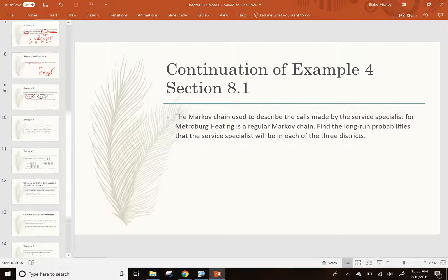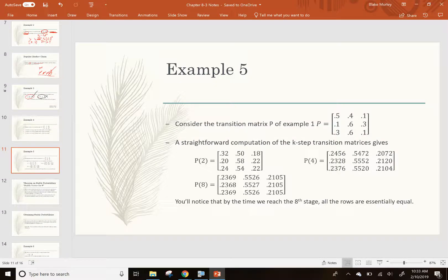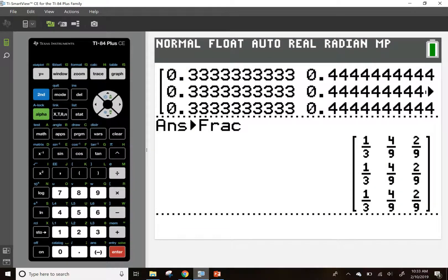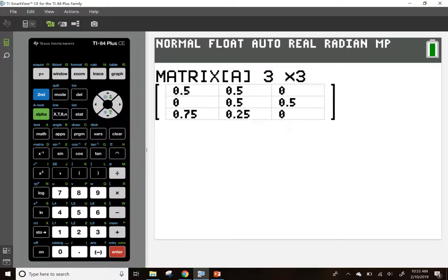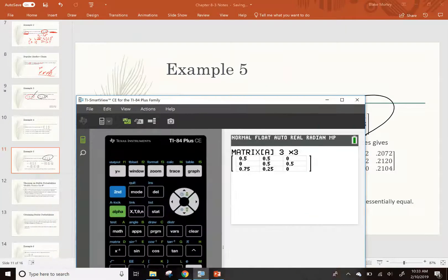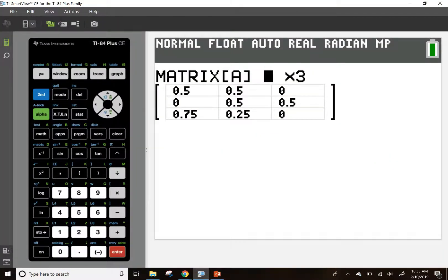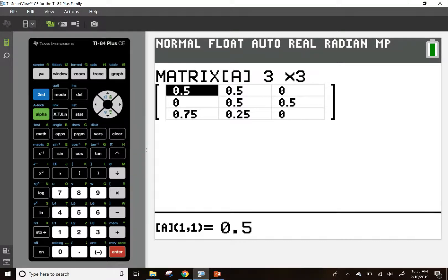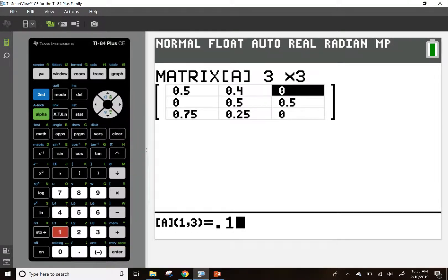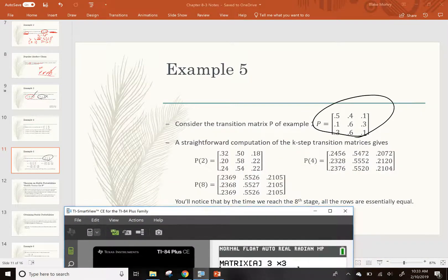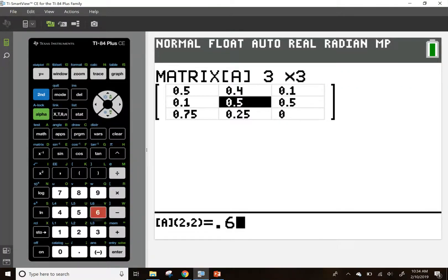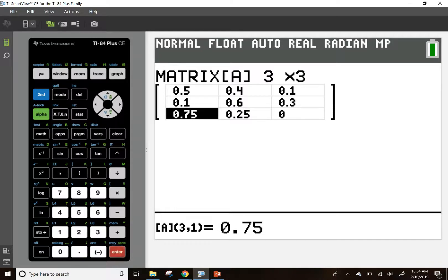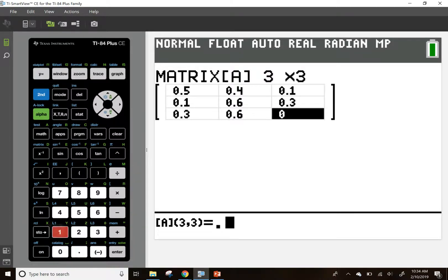So, we're just going to take that matrix, which I need to type in. So, let me put it on the screen. It's this matrix here. Type that in the calculator. And, again, let's raise it to an absurdly large power, like 100. Let's see if that's good enough. That matrix was 0.5, 0.4, 0.1. So, 0.5, 0.4, 0.1, 0.6, 0.3, 0.1, 0.6, 0.3, 0.3, 0.6, 0.1.